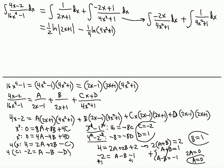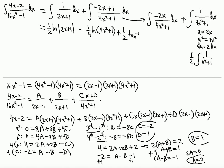For the last integral, 1/(4x² + 1) dx, we use u = 2x so u² = 4x² and du = 2 dx. This gives a factor of 1/2, resulting in (1/2) arctan(2x). The complete antiderivative is (1/2) ln|2x + 1| - (1/4) ln(4x² + 1) + (1/2) arctan(2x) + C. I hope you enjoyed this tutorial — please subscribe to my channel!